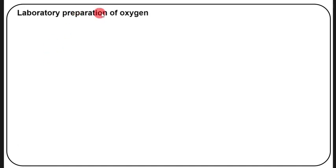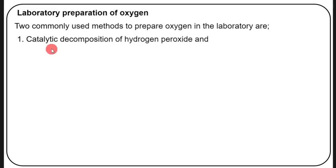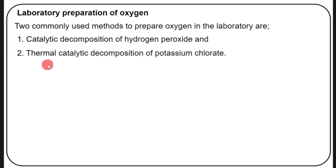Now let's look at the laboratory preparation of oxygen. There are two commonly used methods: number one, catalytic decomposition of hydrogen peroxide; number two, thermal catalytic decomposition of potassium chlorate. These are the two major methods used to prepare oxygen in the laboratory.